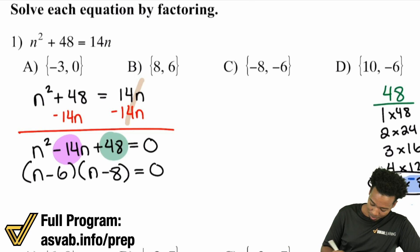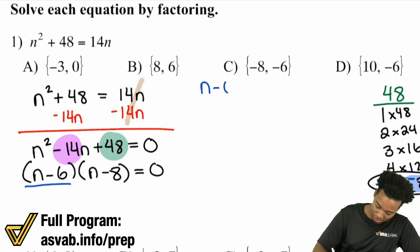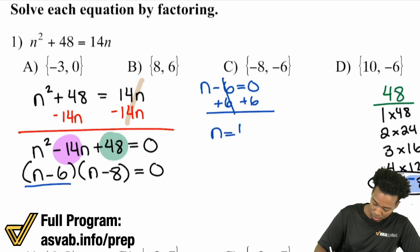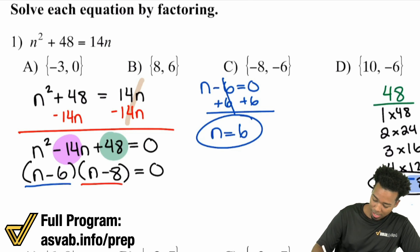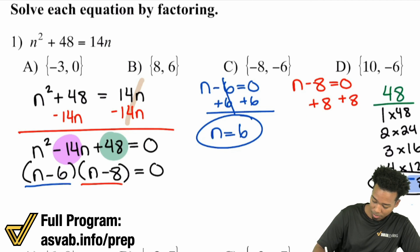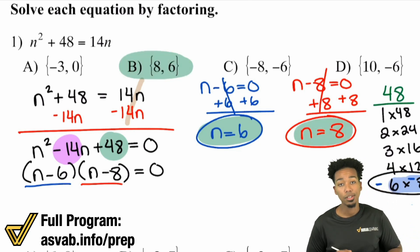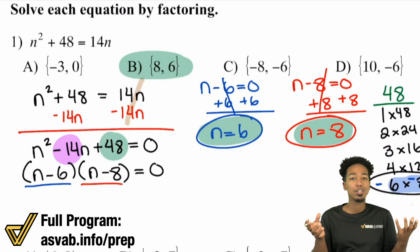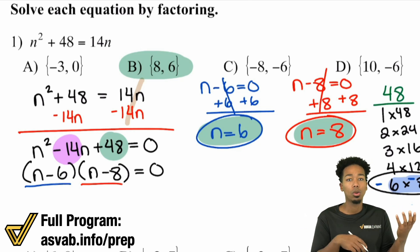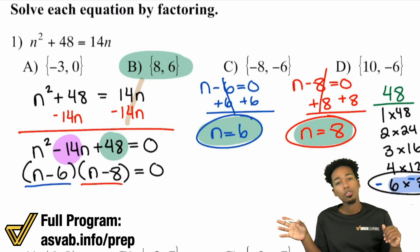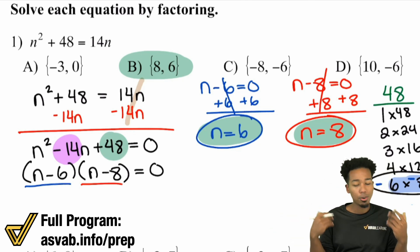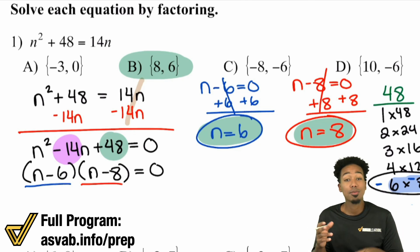So let's go ahead and do it. I'm going to set n minus 6 equal to zero — add 6 on both sides, I get n equals 6. Then I take n minus 8 and set that equal to zero — add 8 to both sides and I get n equals 8. Those are my answers: n equals 6, n equals 8, and that's choice B. If you want to check your work, just plug the number back into the whole equation — it'll check out. Then take the other number, plug that in for all the n's, and you'll see that works too.